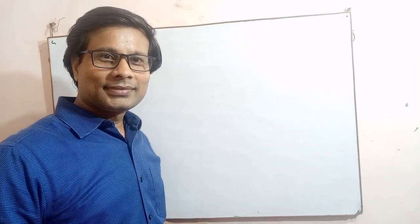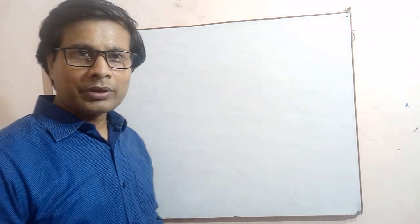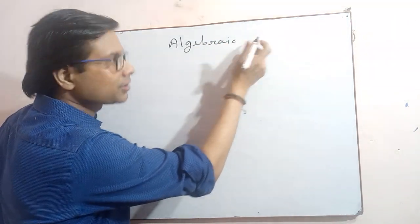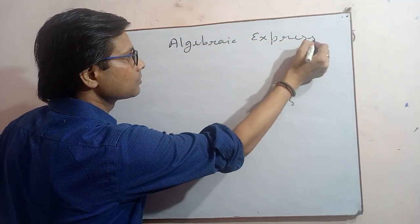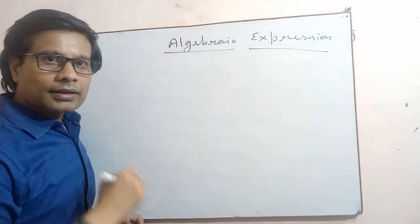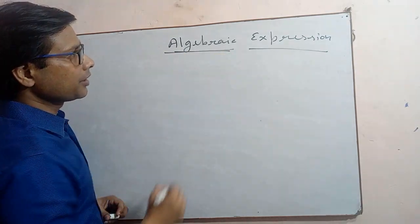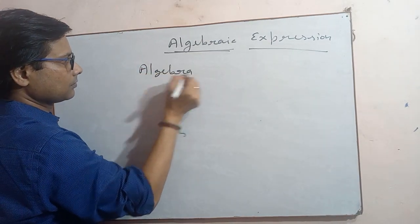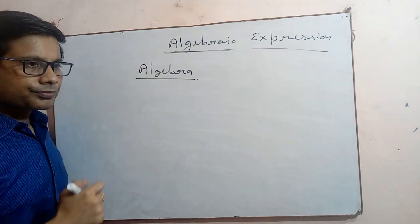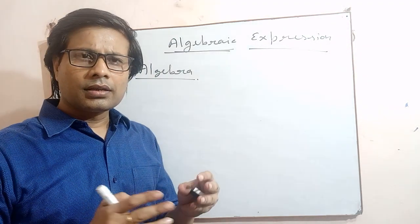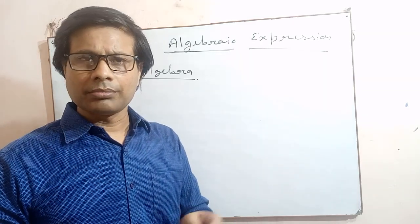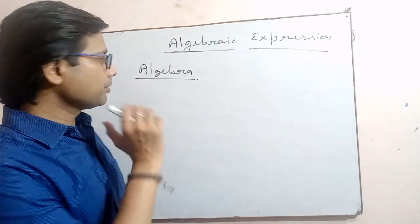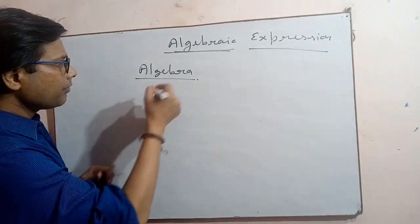Today I am going to discuss the chapter algebraic expression. In this chapter, the word 'algebraic' is taken from the word 'algebra'. Algebra is a branch or part of mathematics — just like arithmetic and geometry, algebra is one such branch. The question also arises: how did we get this word 'algebra'?